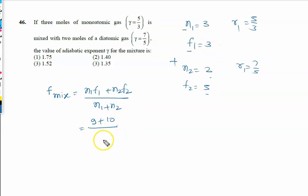upon n₁ plus n₂ is five. So it is nineteen by five. All of us know the relation between gamma and f: gamma is given by one plus two by f. So here, gamma for the mixture is written